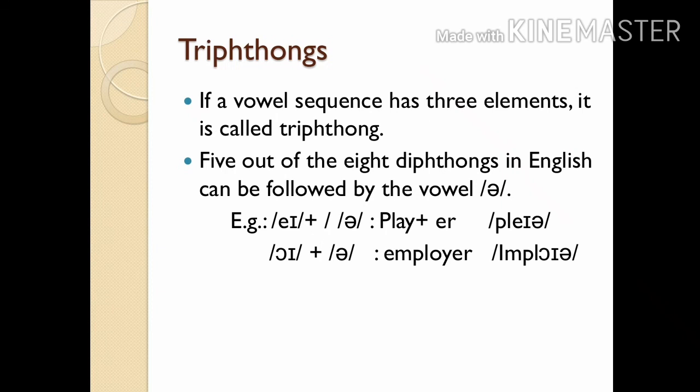If a vowel sequence has three elements it is called a triphthong. Five out of the eight diphthongs that occur in English can be followed by the vowel /ə/, both within a word and at word boundaries.